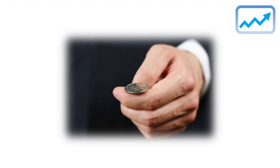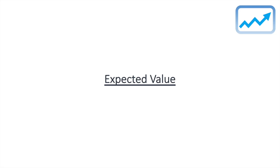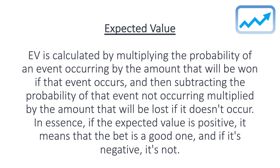In trading it's essential to understand the concept of expected value. This is a measure of the potential return on investment for a particular trade or bet. It's calculated by multiplying the probability of an event occurring by the amount that will be won if that event occurs, and then subtracting the probability of that event not occurring multiplied by the amount that will be lost if it doesn't occur. If the expected value is positive, the bet is a good one; if it's negative, it's not.